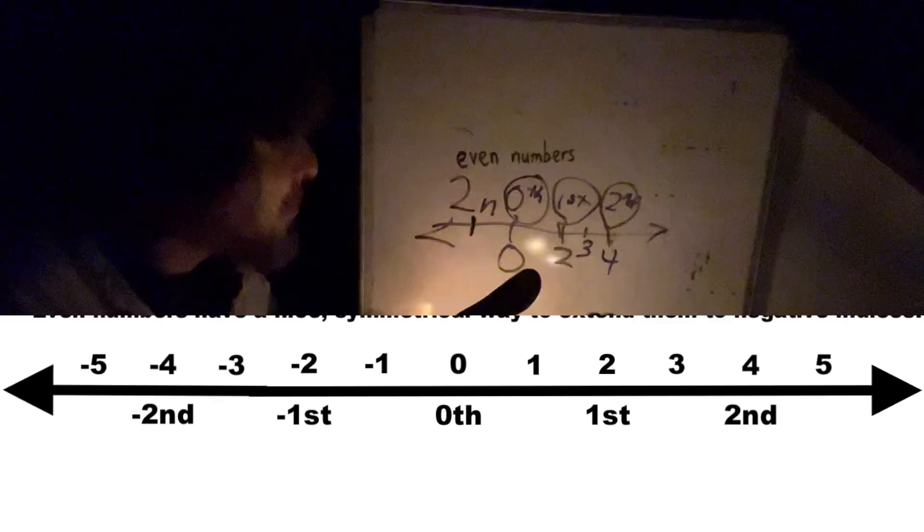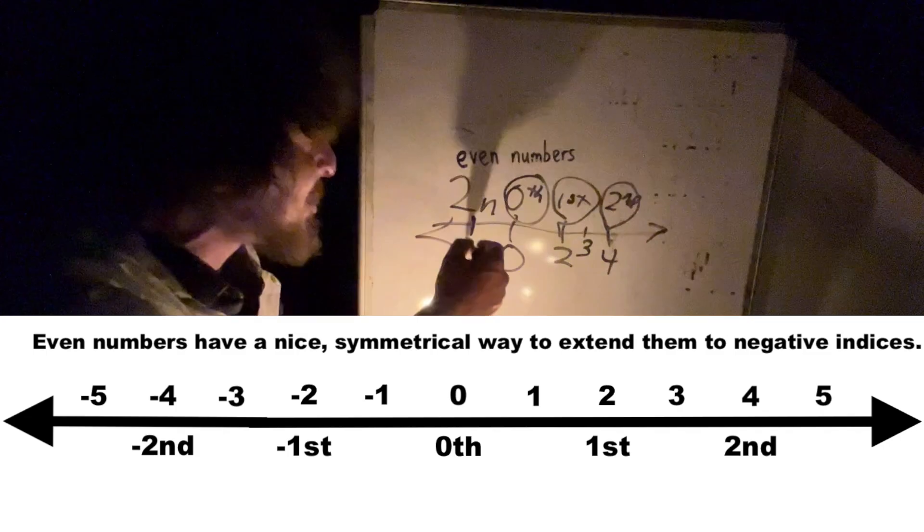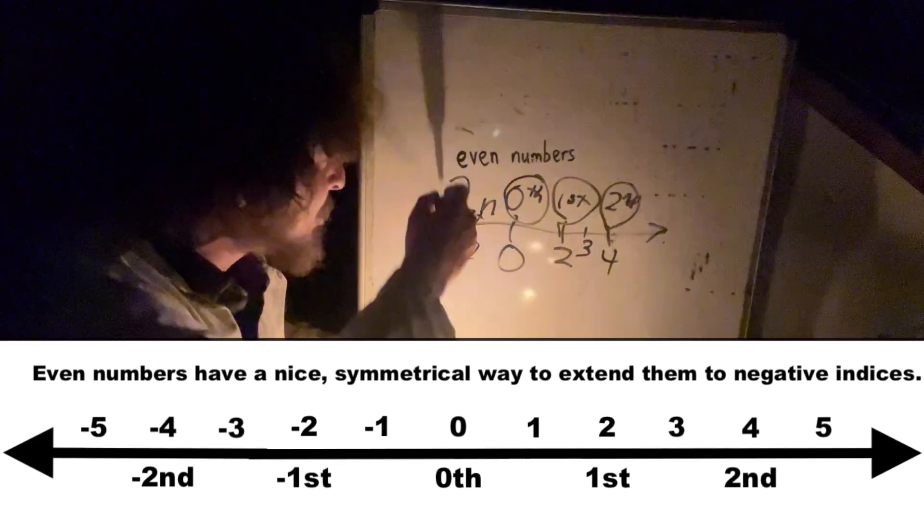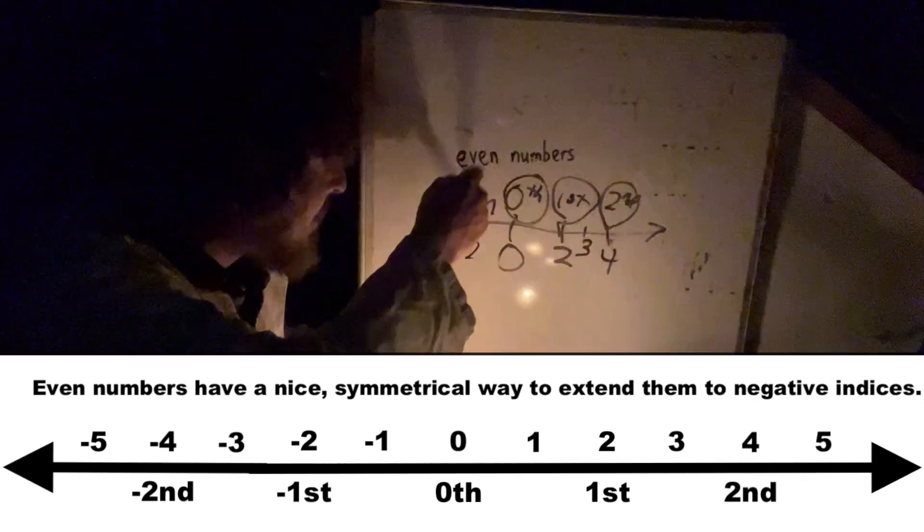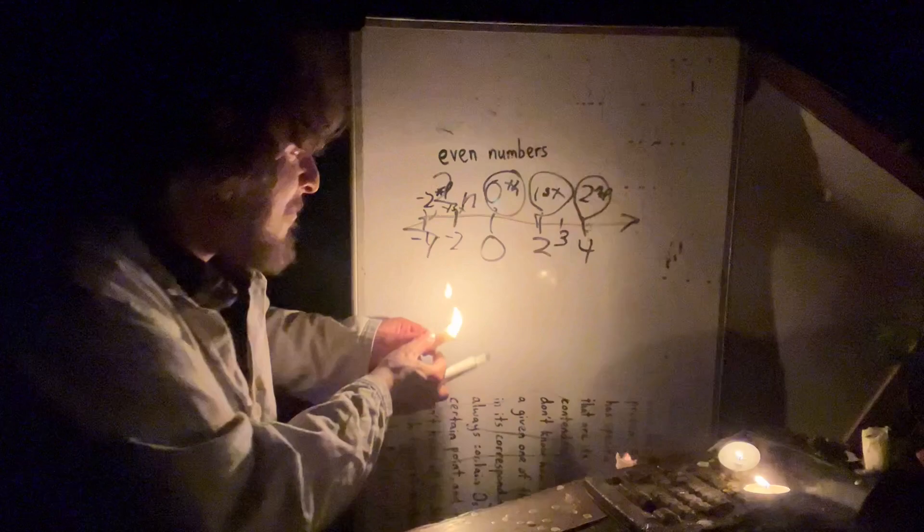And that completely would make sense. By all sensible ways of defining this, the negative first even number should be negative two and the negative second should be negative four and so on.